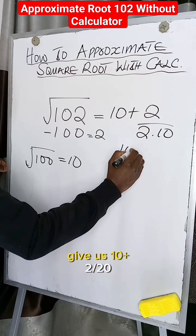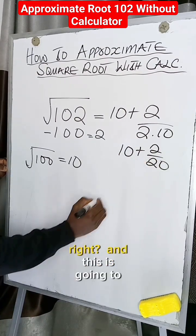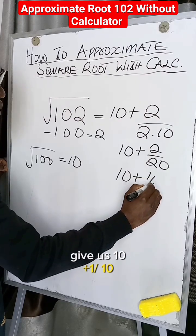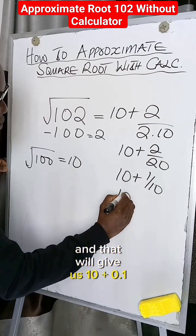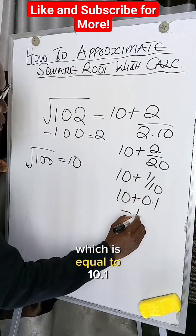And this is going to give us 10 plus 2 divided by 20, and this is going to give us 10 plus 1 divided by 10, and that will give us 10 plus 0.1, which is equal to 10.1.